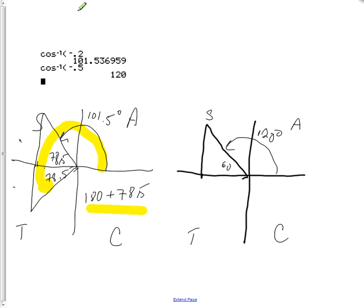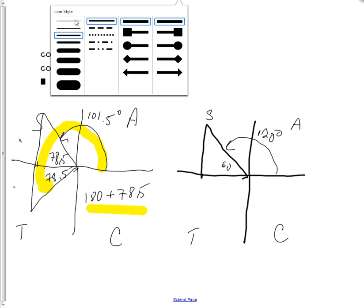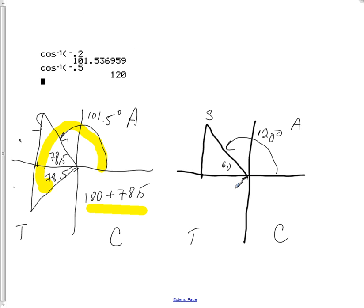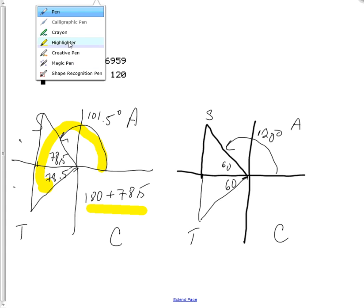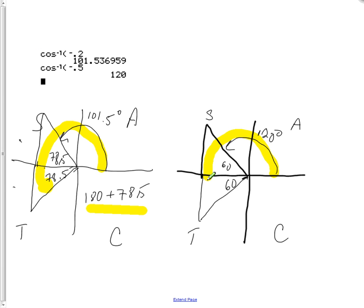Okay, and then on the same for the cosine 1 half, we get the same thing going on. Let's draw on that reference triangle. So that's 60 also. And that means that other angular rotation is going to be 180 plus 60 or 240.